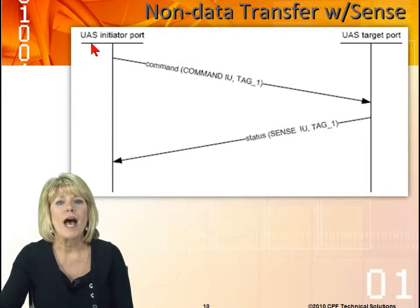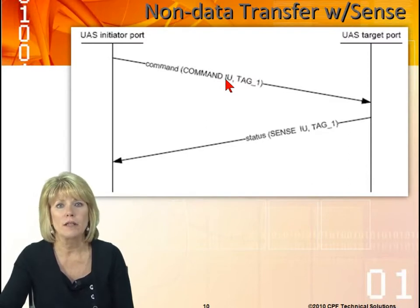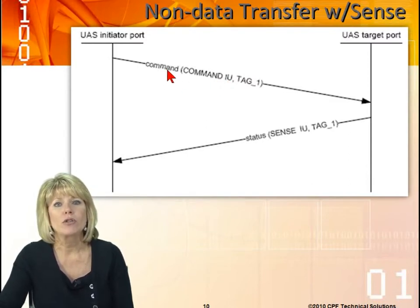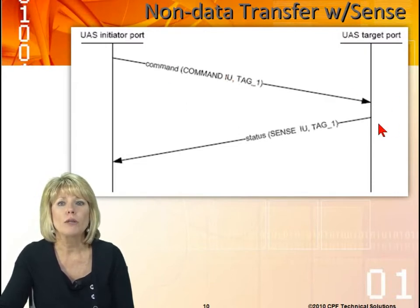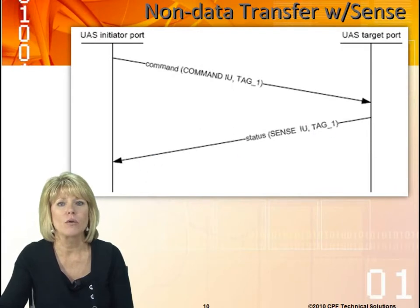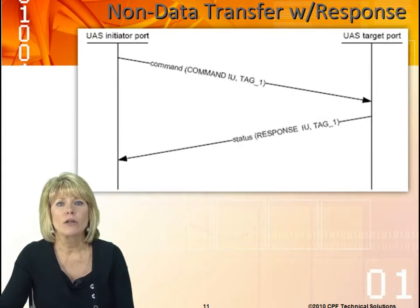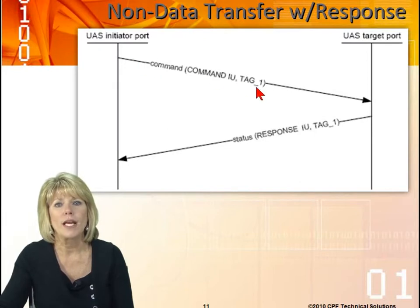On this particular one, we have a command, and that command is going to have an IU based on what kind of command it is. That command is going out the command pipe, and it has a tag value of one. When the target port reports its status, it's going to send that back on the status pipe with the status of that particular tag. This particular command has no data transfer — so here we have our command coming out, our status coming in, and it's the response to that particular tag.